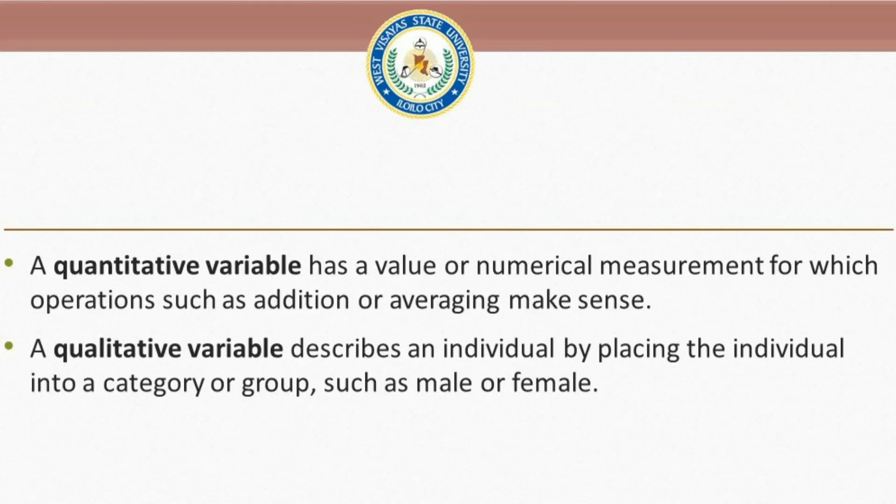Variables may be classified as quantitative or qualitative. A quantitative variable has a value or numerical measurement for which operations such as addition or averaging make sense. A student's grade is an example of a quantitative variable.